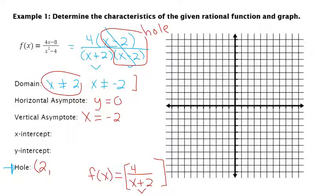The rest is kind of the same. For the x-intercept, if I set the top equal to 0, that won't really make sense, so there's not an x-intercept. The y-intercept is where I put 0 in for x. 4 over 0 plus 2 is 2, so my y-intercept is 2.